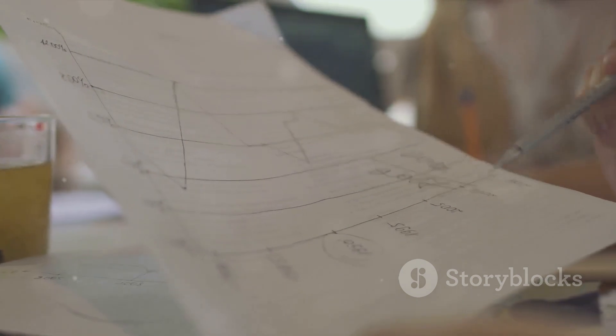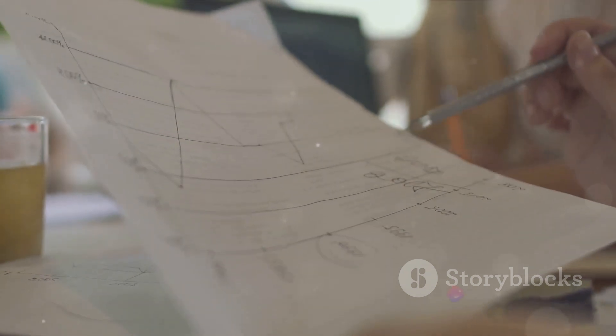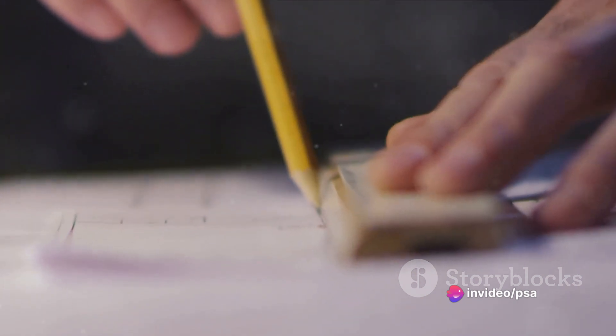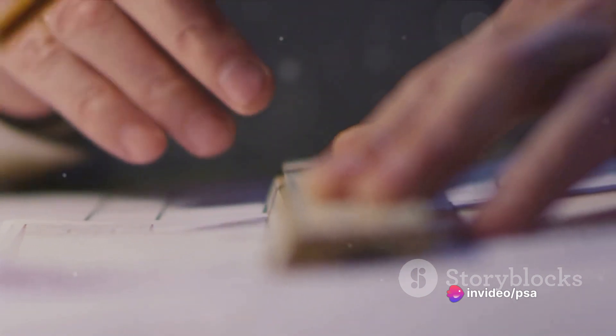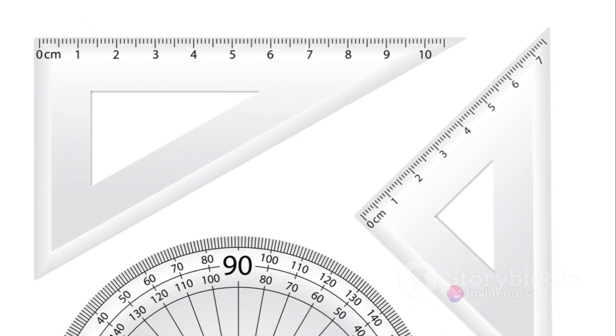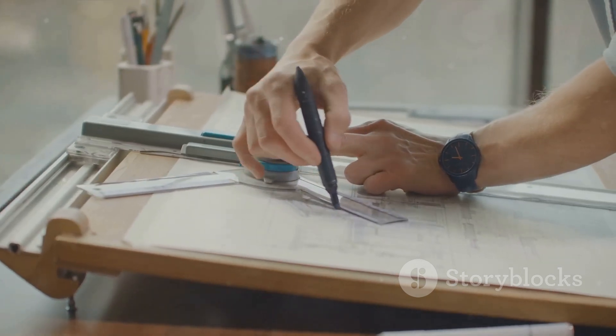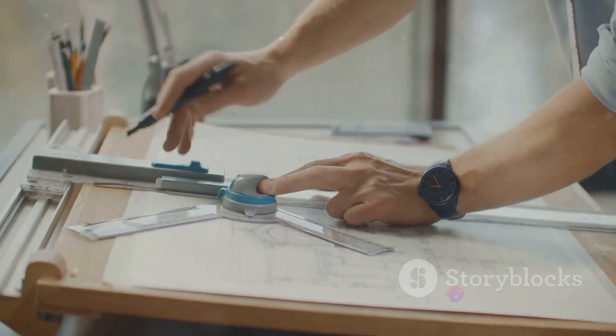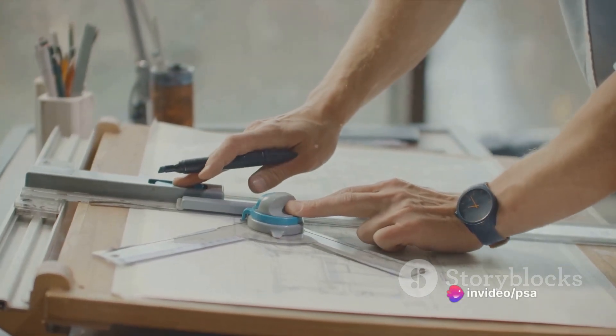Similarly, the cosine of 30 degrees is approximately 0.87. So, the adjacent side would be roughly 1.74 units long if the hypotenuse is two units. Then there's the tangent of 30 degrees, which is approximately 0.58.